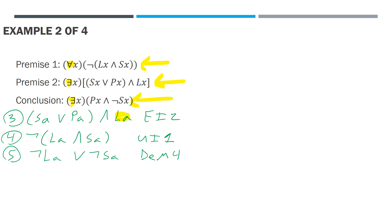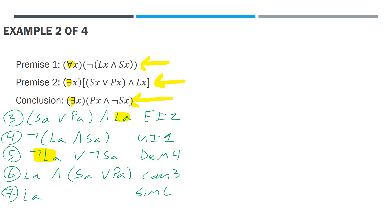Thus, for line six we get la and (sa or pa) by the commutative rule from line three. Line seven: we get la by simplification of line six. Line eight: let's double negate to get not not la, by double negation line seven. Not not la denies not la. Thus for line nine, we can get not sa by disjunctive syllogism with lines five and eight.